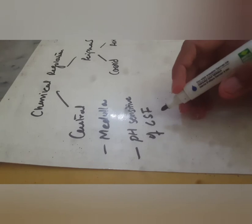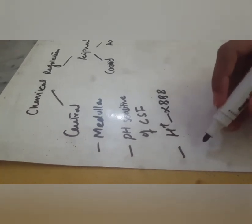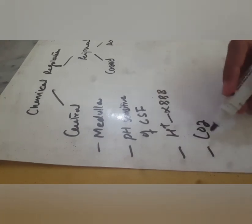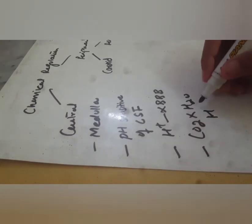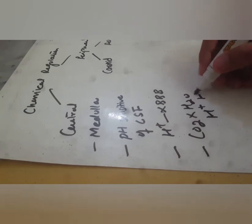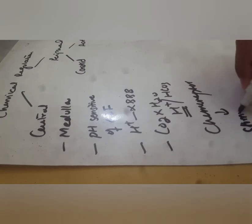Hydrogen ions cannot cross the blood-brain barrier, but carbon dioxide can. Carbon dioxide crosses the blood-brain barrier, reacts with water, and forms carbonic acid, which dissociates into H⁺ and HCO₃⁻. This disturbance in CSF pH then activates the central chemoreceptors and stimulates breathing.